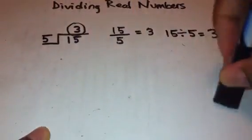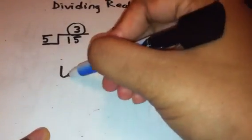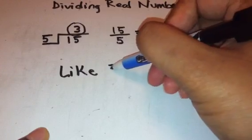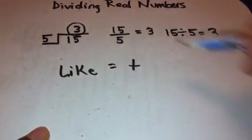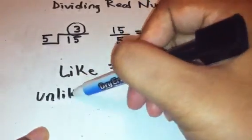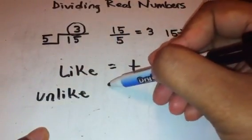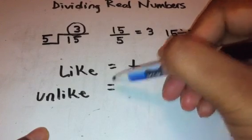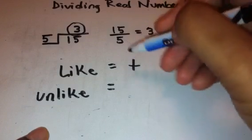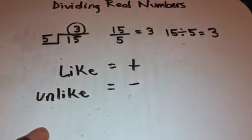And let's take a look at how this works. Well, your like signs, if you're dividing two numbers that have the same sign, your answer is going to be positive. For unlike signs, if you're doing division and both numbers have different signs in front of them, your answer is going to be negative. And that was the same, those are the same principles of multiplication that we just did.